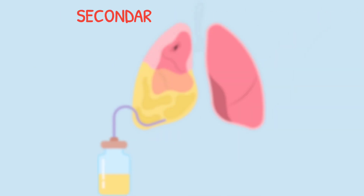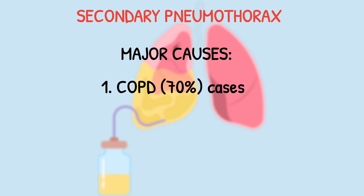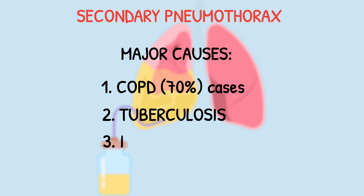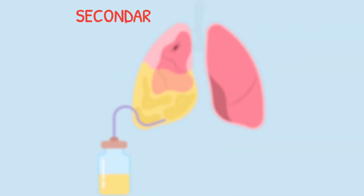Secondary pneumothorax can be due to multiple causes, but most commonly COPD — responsible for 70% of cases. Tuberculosis can cause it, idiopathic pulmonary fibrosis can lead to it, and PCP pneumonia is also very important.